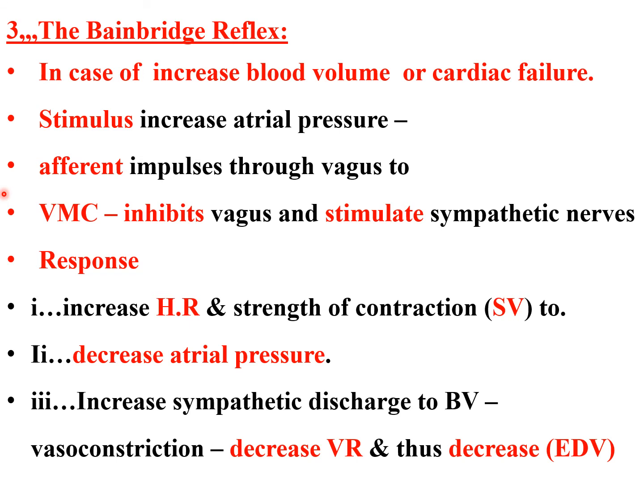The response leads to decreased atrial pressure. The vasomotor center inhibits the vagus — heart rate not increased — and stimulates the sympathetic nerves. This reciprocal innervation from the vasomotor center to the parasympathetic and sympathetic nerves is called the Bainbridge reflex.